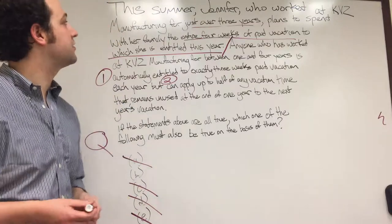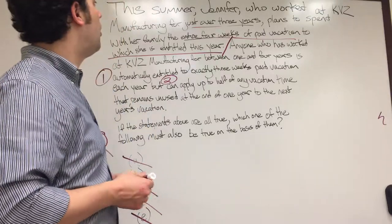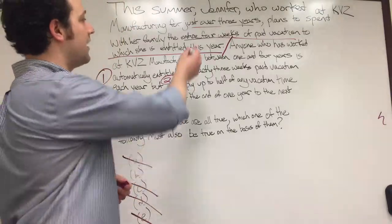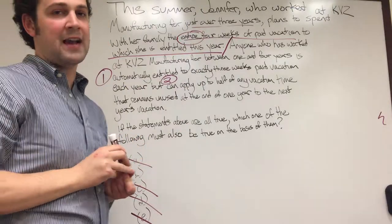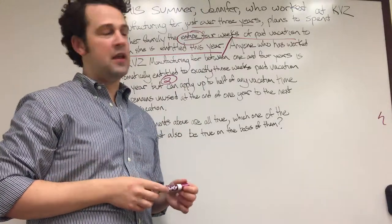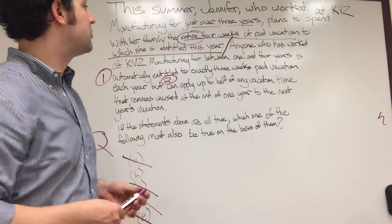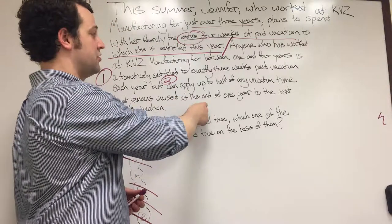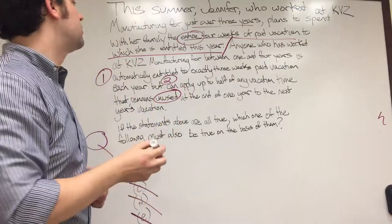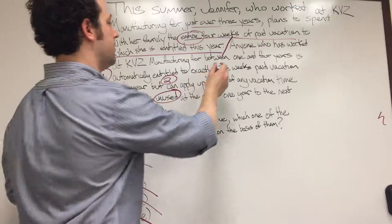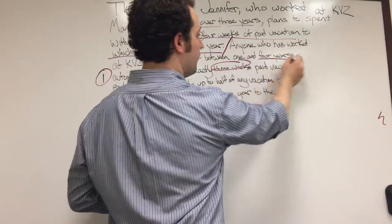She's spending all four weeks to which she's entitled all four weeks. The entire four weeks means that she's not rolling forward any unused vacation time. If she's not rolling forward any vacation time and she's only allowed to roll forward additional time if it's unused,